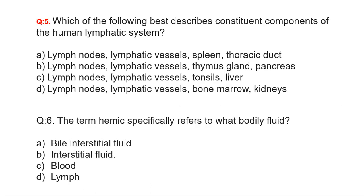Question number five: Which of the following best describes the constituent components of the human lymphatic system? The answer is lymph nodes, lymphatic vessels, spleen, and thoracic duct. Question number six: The term 'heme' specifically refers to what bodily fluid? The answer is blood.